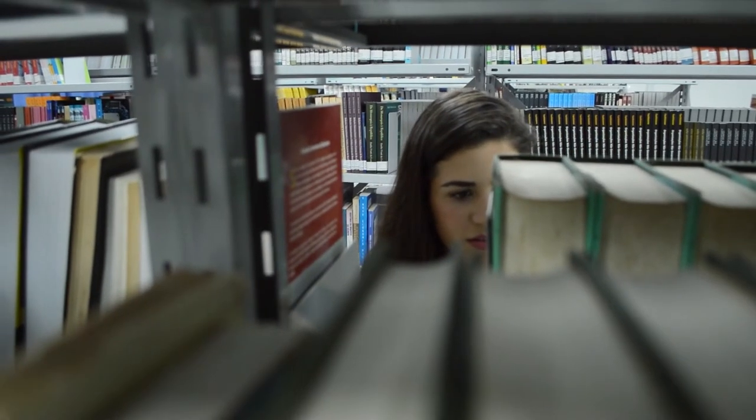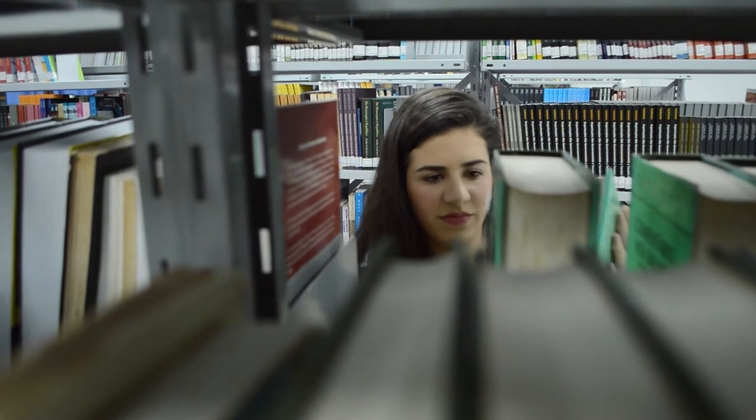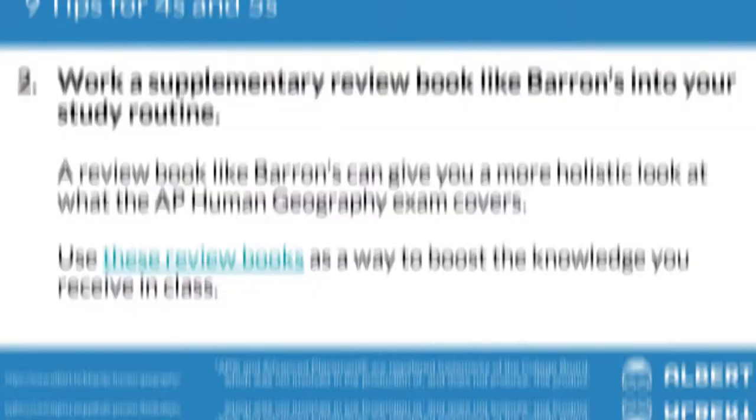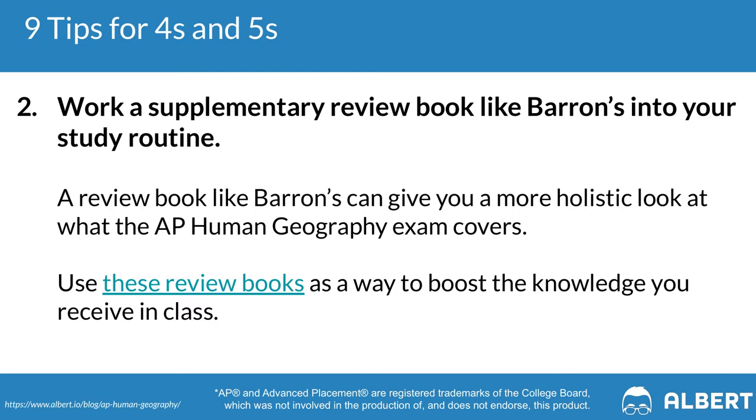Our second tip when it comes to AP HUG is to make sure that you pick up a review resource, whether that's a Barron's review book or an online resource like Albert. With these sorts of resources, you'll be able to work through practice questions and see which topic areas you're struggling in and which topic areas you're doing really well in. This will allow you to make the most of your limited study time so that you're only working on your biggest weaknesses as opposed to just practicing up on your strengths. Having review resources is also helpful because they can provide you with a different way of understanding a particular concept or principle than how your teacher or your textbook first introduced that concept.